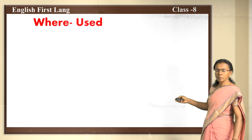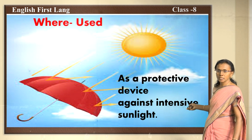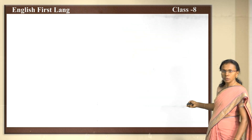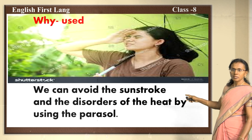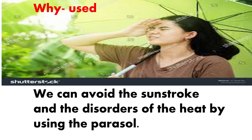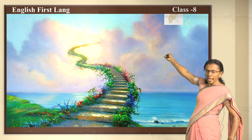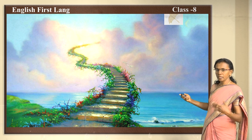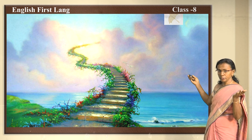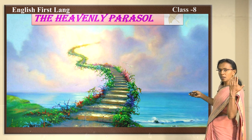Now we will move on in detail about the parasol. Where is it used? It is used as a protective device against intense sunlight. Why is it used? We can avoid sunstroke and disorders of heat by using the parasol. Now see there — you can see steps running from here to the sky. There is an umbrella from heaven coming — it is a heavenly parasol. That is your first lesson, the heavenly parasol.